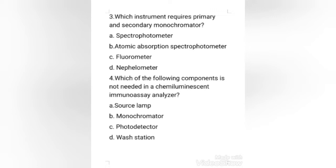Chemiluminescence is the production of light following a chemical reaction. Immunoassays based upon chemiluminescence generate light when the chemiluminescent molecules become excited; therefore, a light source is not used. In immunoassay platforms, chemiluminescent molecules such as acridinium can be used to label antigens or antibodies. So the right answer is option A, source lamp.